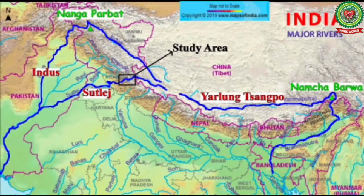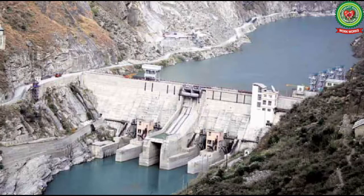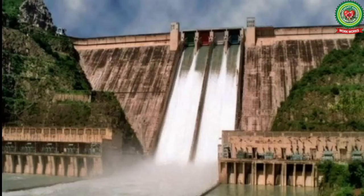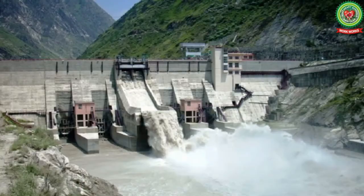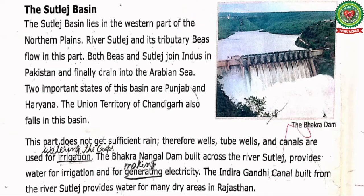Now we will talk about the Sutlej basin. The Sutlej river originates in Tibet, China, and flows through three countries — China, India, and Pakistan. There are several major hydroelectric projects on the Sutlej river, like Bhakra Dam and Natpa Jakri Dam. The main tributary of river Sutlej is Beas.